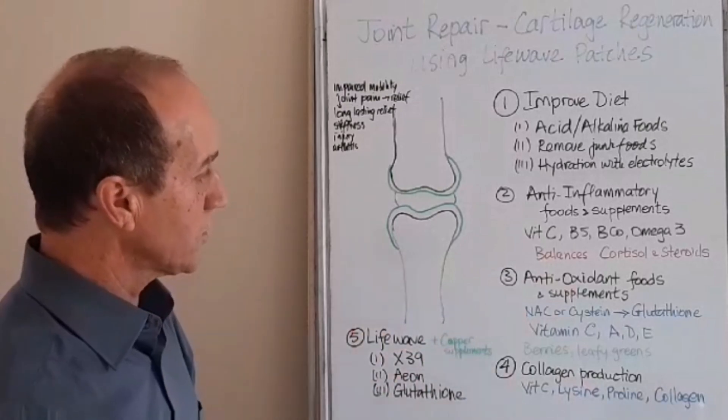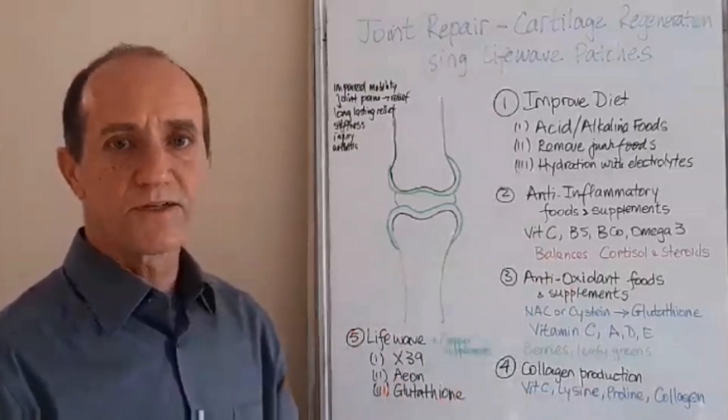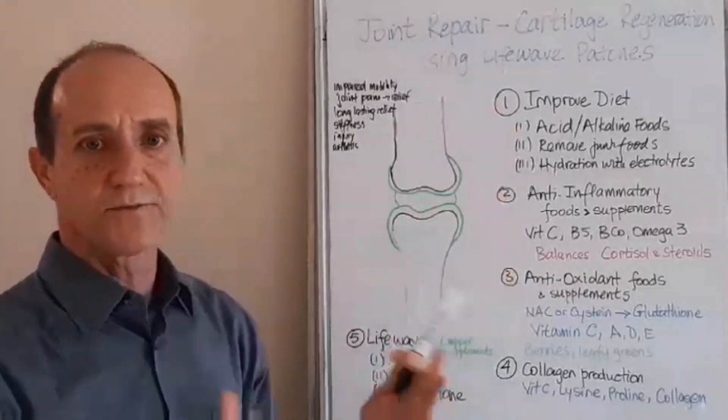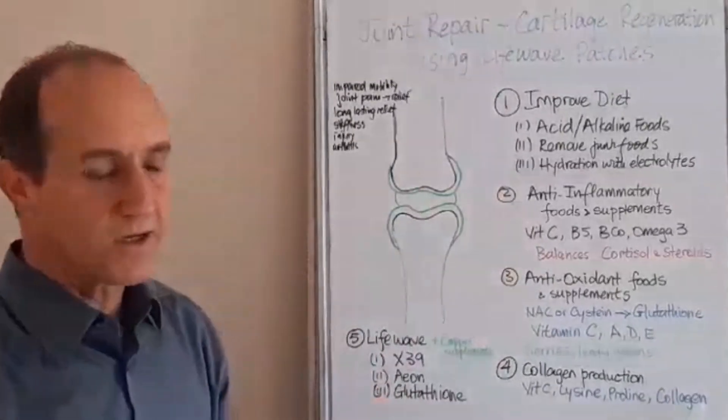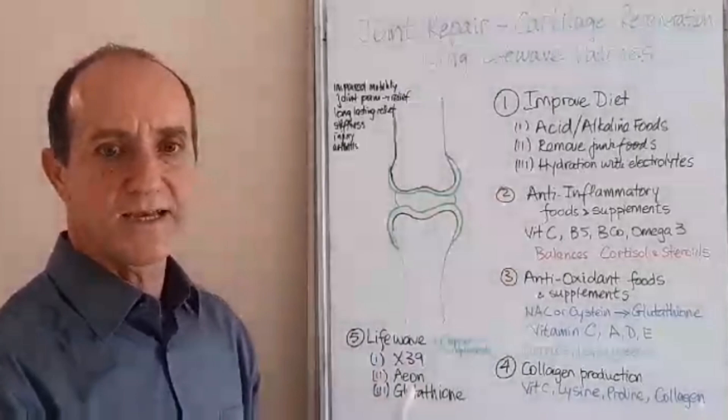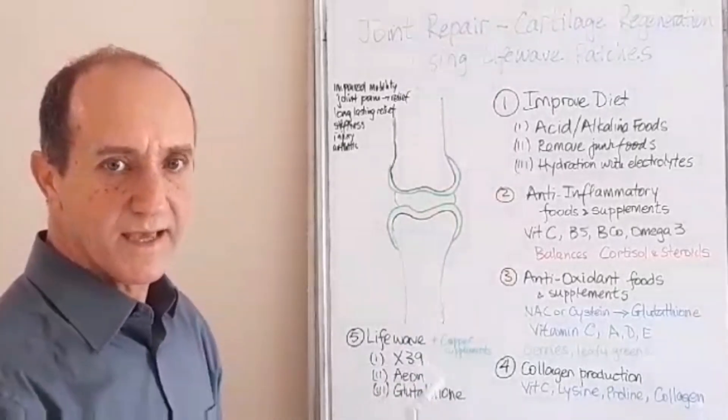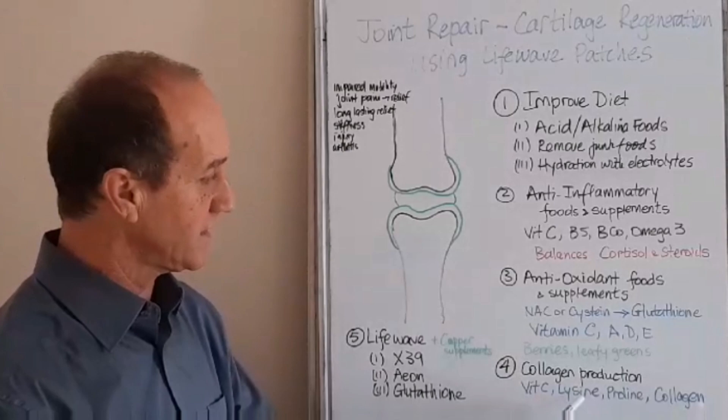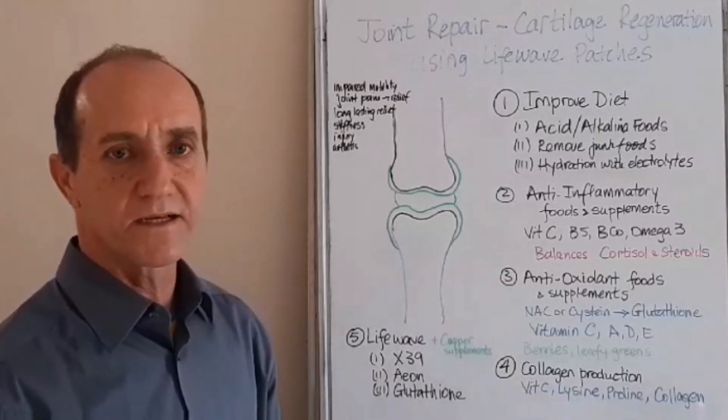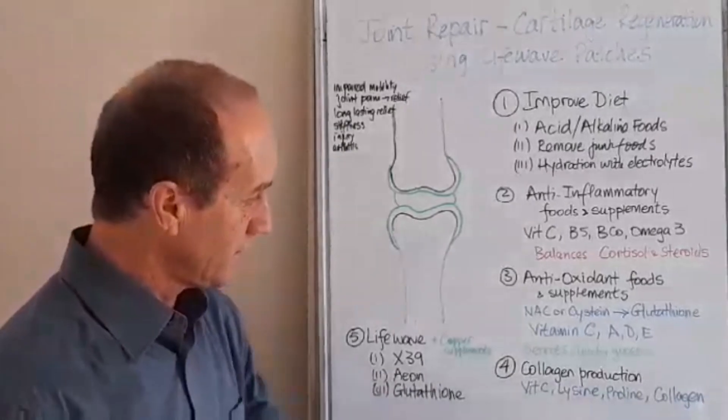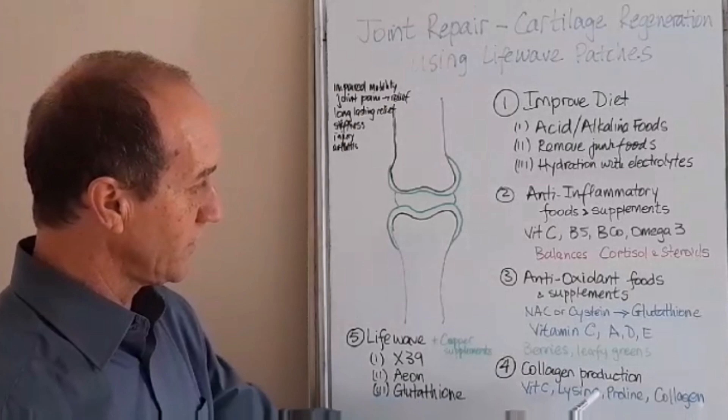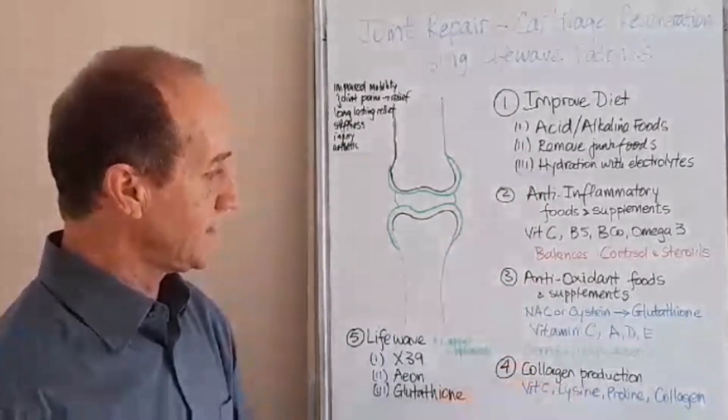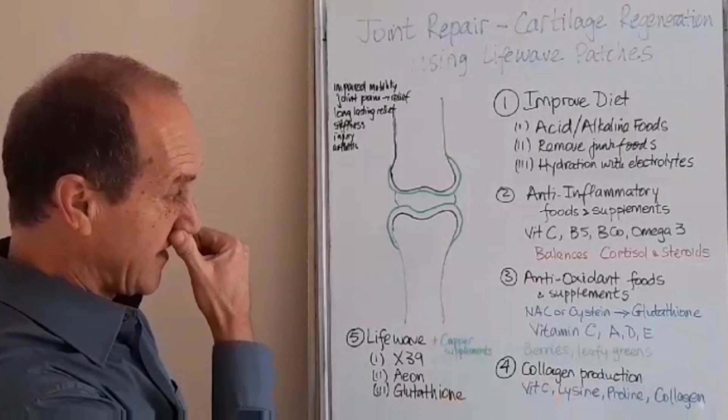Number four, you need collagen. Collagen is the raw materials of your cartilage. Before cartilage can be made, your body has to produce collagen. How does the body make collagen? It needs vitamin C as a catalyst because vitamin C activates the process of the collagen production, which is done from amino acid lysine and protein. Or you can take collagen supplements which will provide those materials.